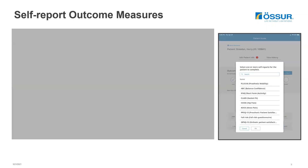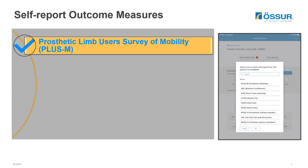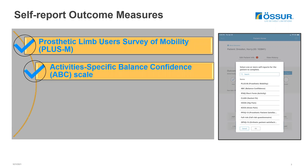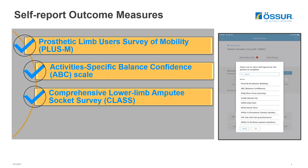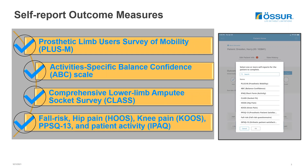With patients' answers on the self-report questionnaires, you can look at their perceived prosthetic mobility with the PLAS-M, their perceived balance confidence with the ABC scale, and their satisfaction with the prosthetic socket using the CLAS. You can also use the fall risk questionnaire, the WHOS, COOS, PPSQ-13, and the IPAC short form.